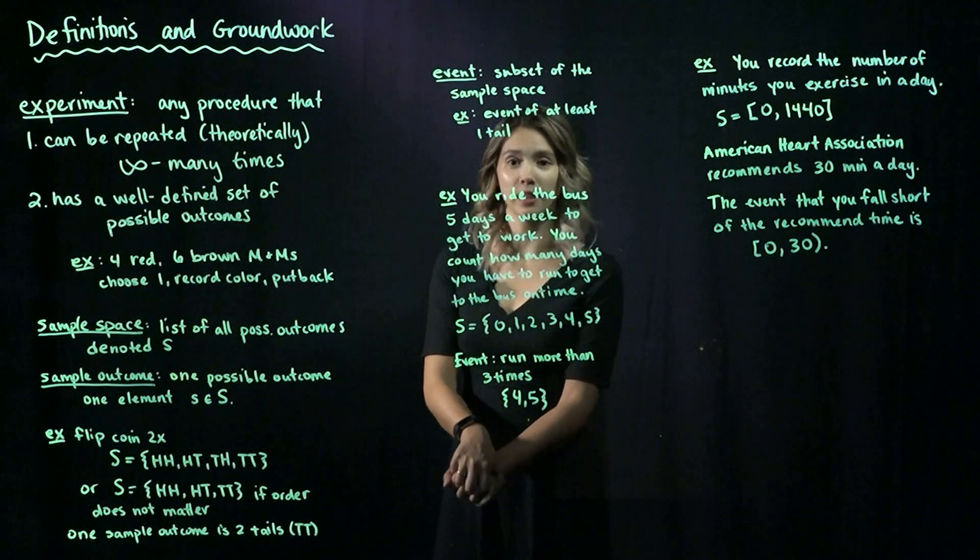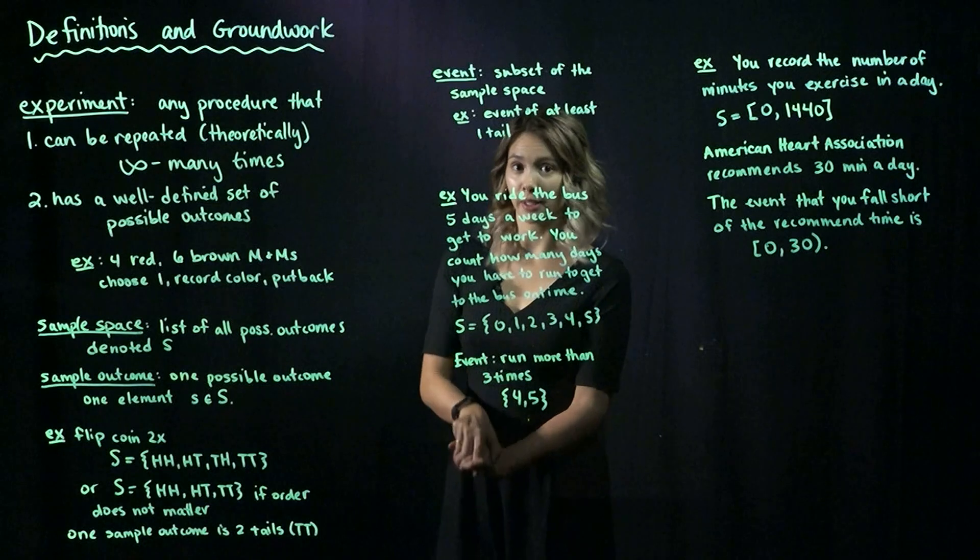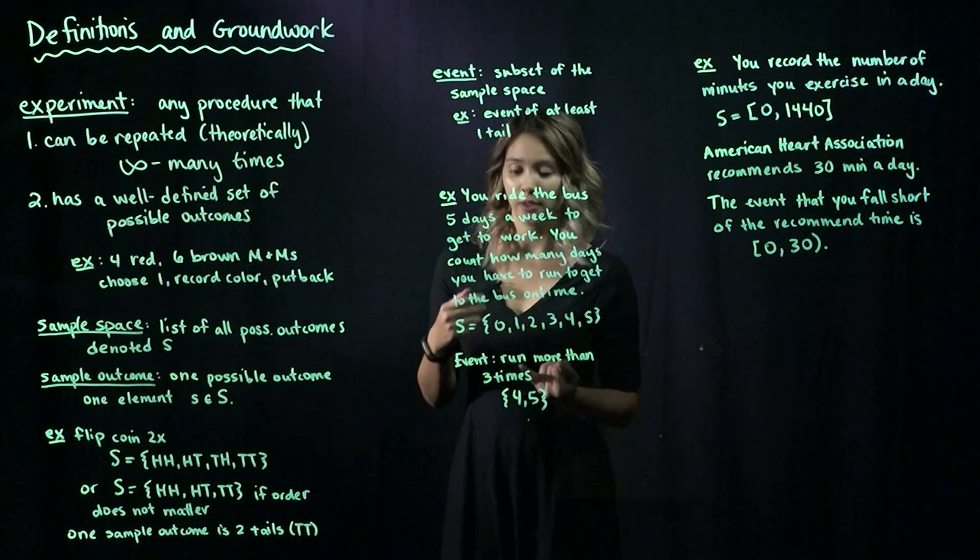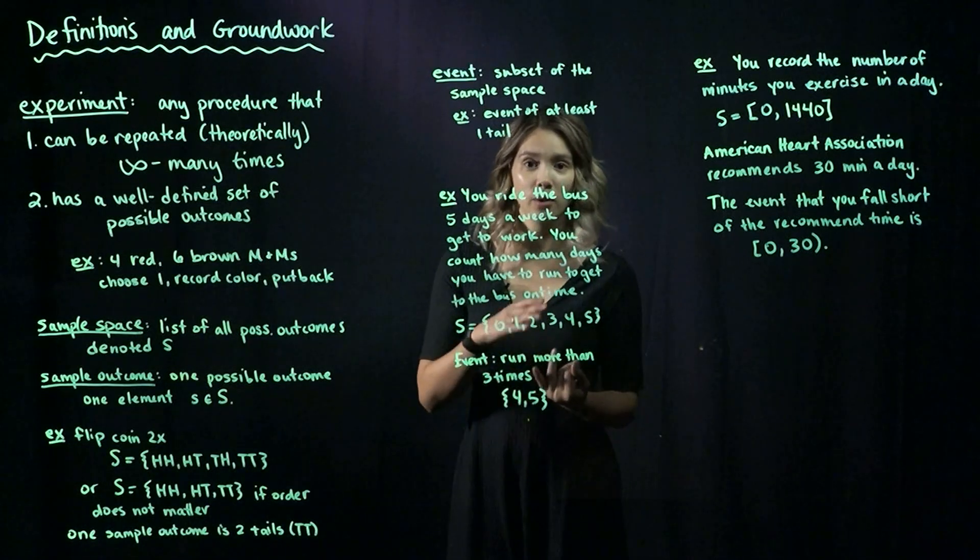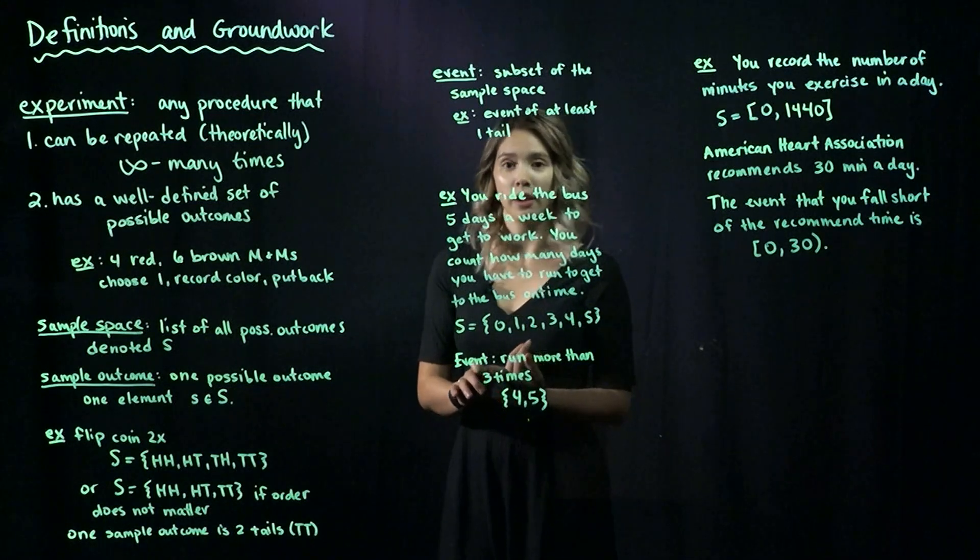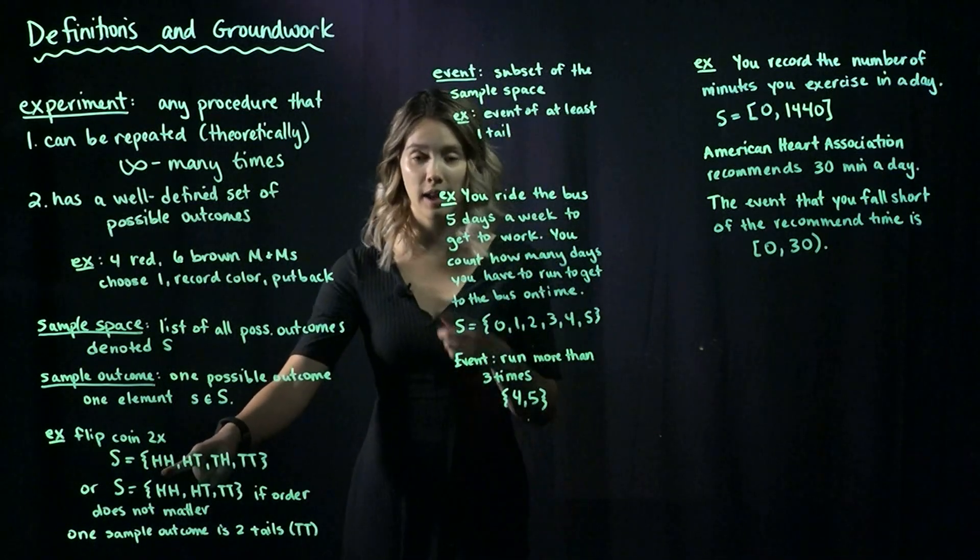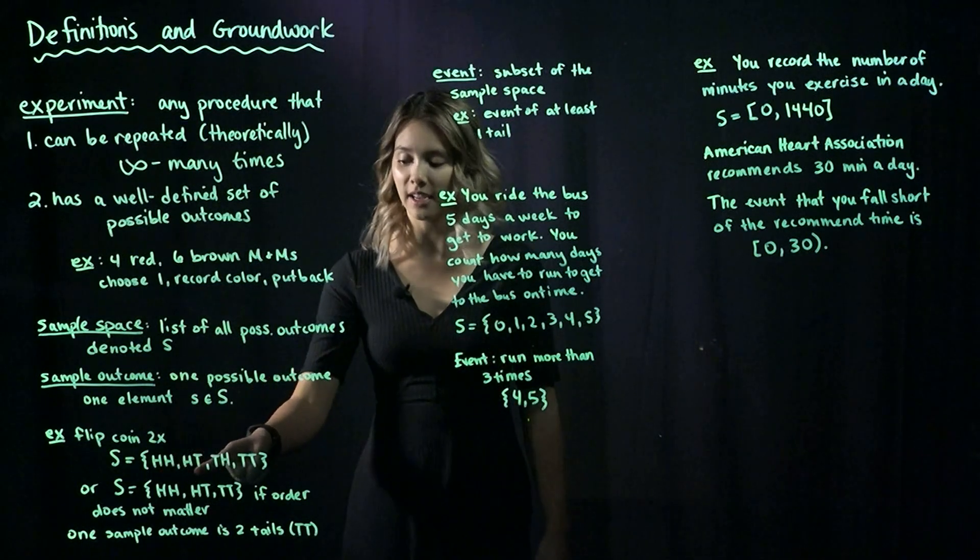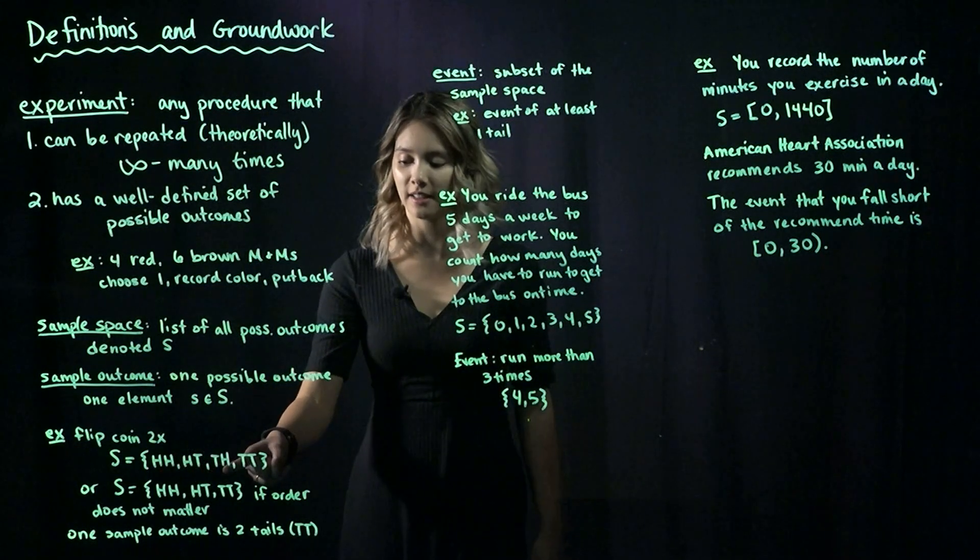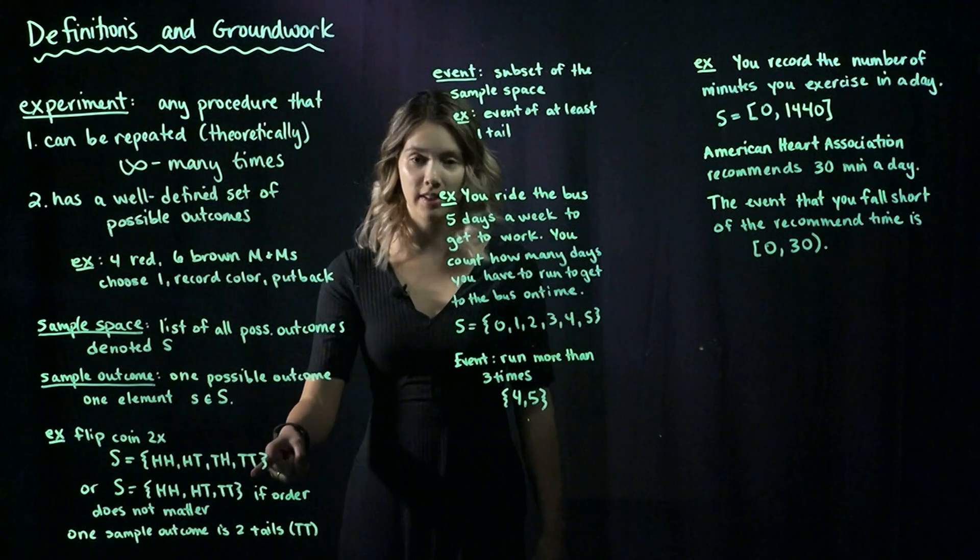For example, say I have a coin and I flip it two times, and I want to see whether the coin flip results in heads or tails. The sample space would be two heads, heads and tails, tails and heads, or tails and then tails.